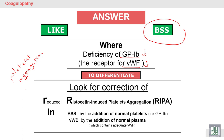The platelet aggregation studies will be the same in both Bernard-Soulier syndrome and von Willebrand disease. We look for correction of the reduced ristocetin-induced platelet aggregation. The aggregation study — you can review the platelet aggregation studies in both Bernard-Soulier syndrome and von Willebrand disease — and you will find the same picture.